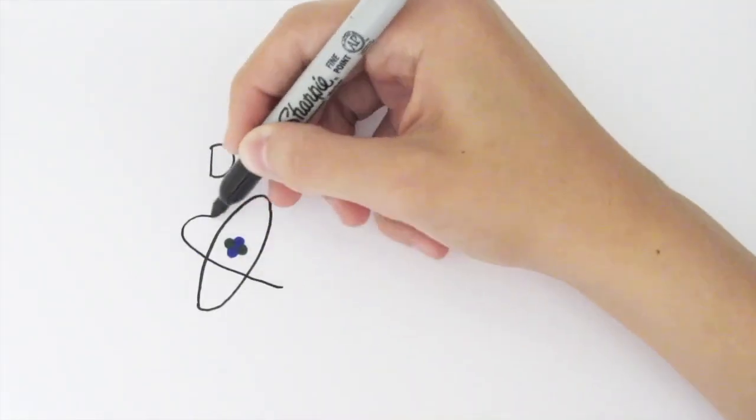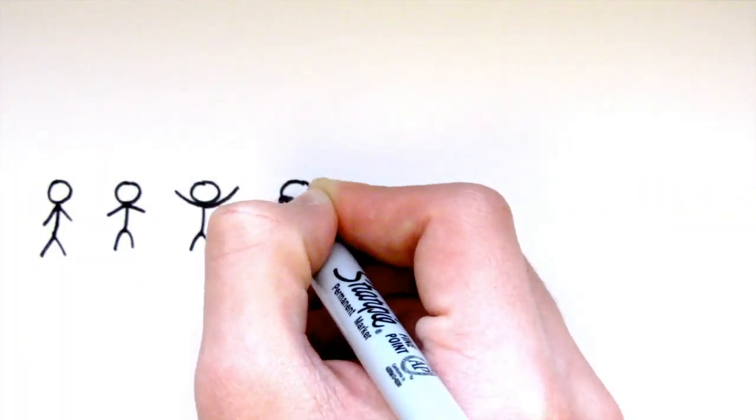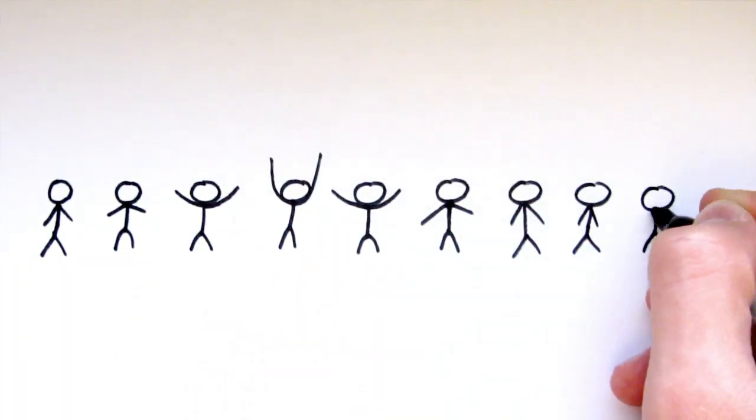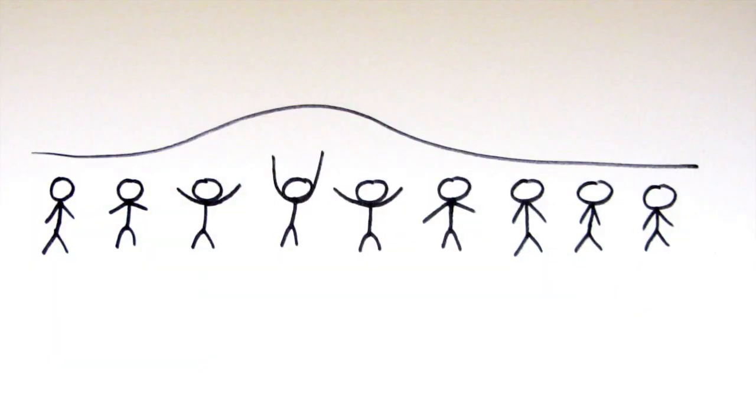Waves are vibrations that transfer energy from place to place without matter being transferred. Think of a Mexican wave in a football crowd. The wave moves around the stadium while each spectator stays in their seat, only moving up and down when it's their turn.